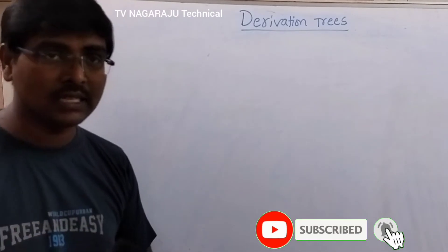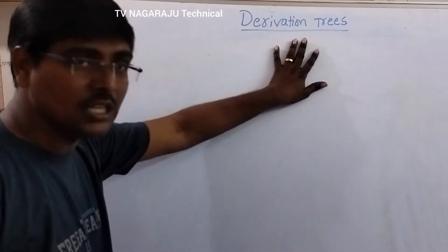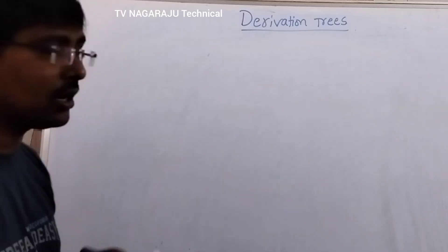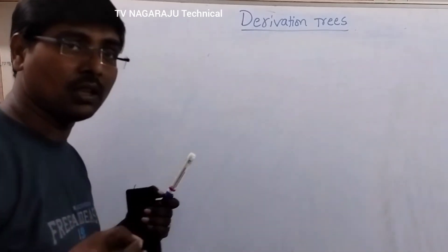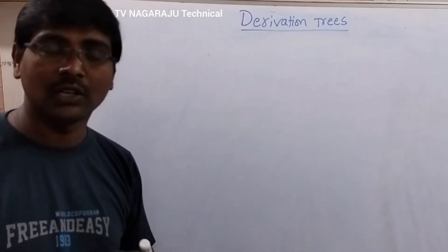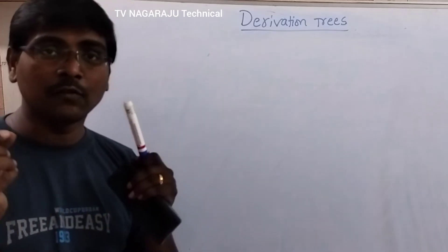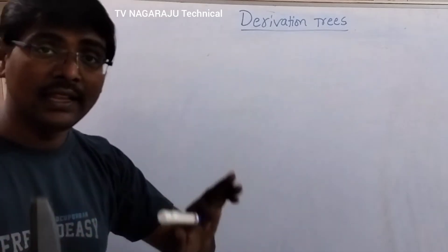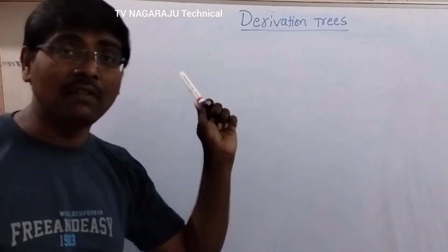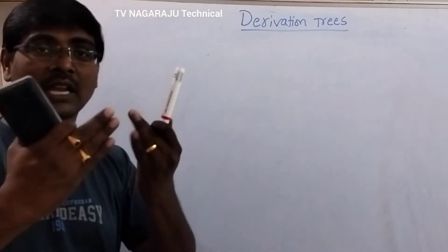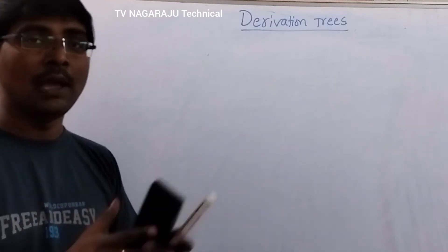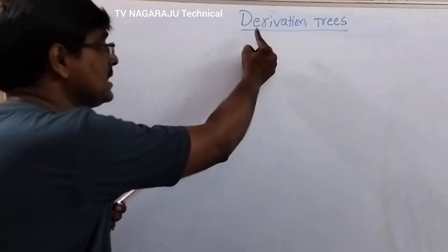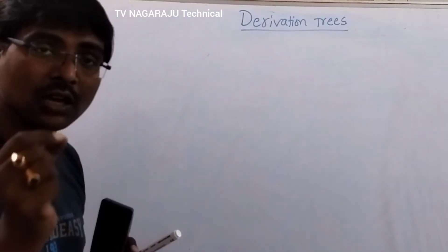In this session we will discuss an example of derivation tree. We already discussed the concept of derivation tree, but again I will repeat the same thing. What do you mean by derivation? A process of generating strings — simply the process of generating strings from the given productions. That means I am giving a grammar to you, and based on the grammar we are generating some strings. That is called derivation.